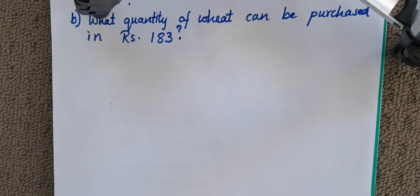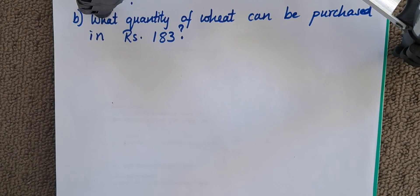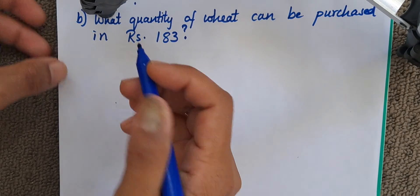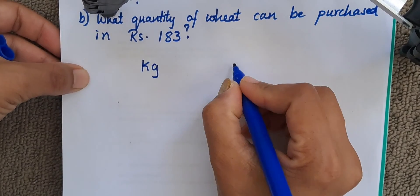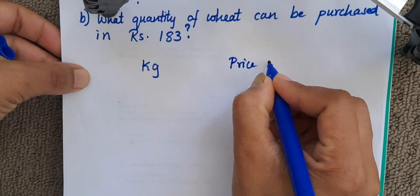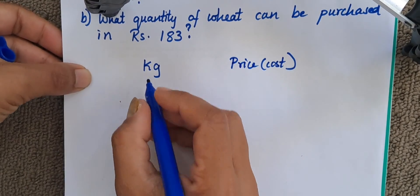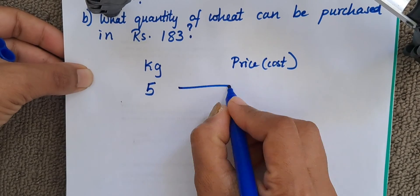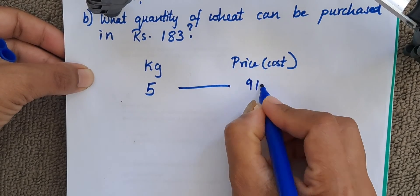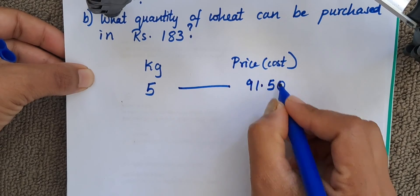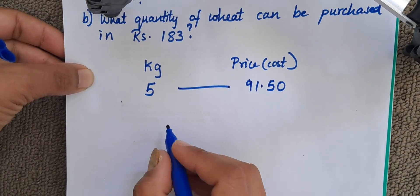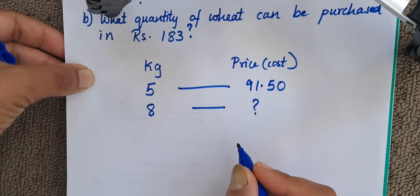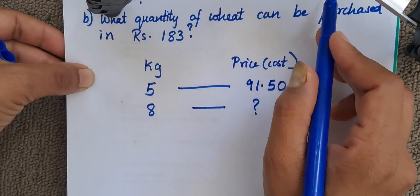Now, we will do it by cross multiplication. While doing cross multiplication, you have to be little careful with the parameters like I will write here kg and price, that is cost. Now here they have given us for 5 kg, 5 kg of wheat will cost us 91.5 rupees. So 8 kg will cost how much? That is the question. What will be the cost of 8 kg of wheat?